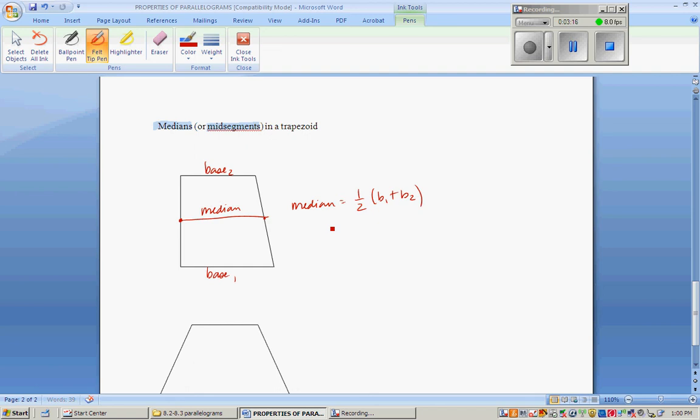Or, the easier way to do that is to say two times the median equals base one plus base two.